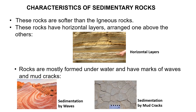Rocks are mostly formed under water and have marks of waves and mud cracks. You can see that sedimentation happens because of waves — waves in the sea leave these lines. There is also sedimentation by mud cracks, and there are marks visible on the sedimented areas.